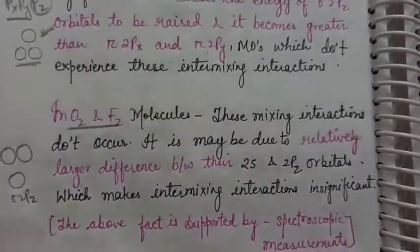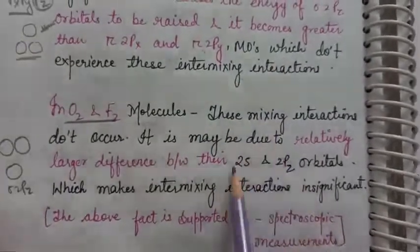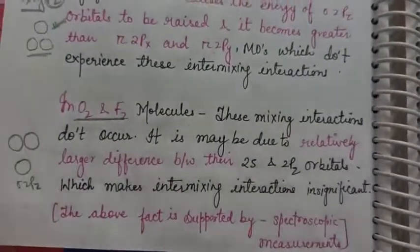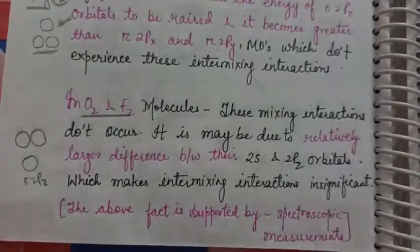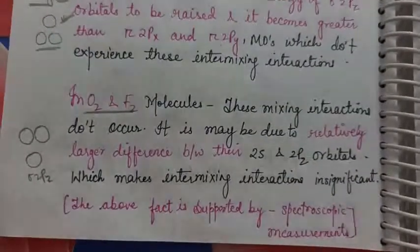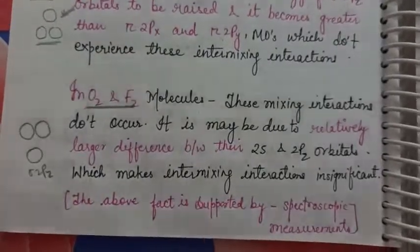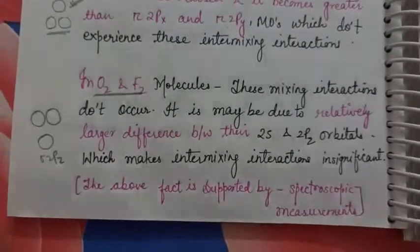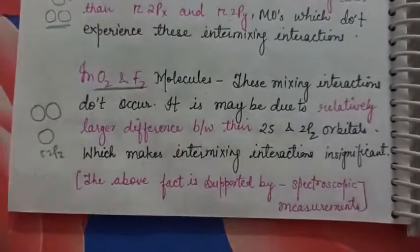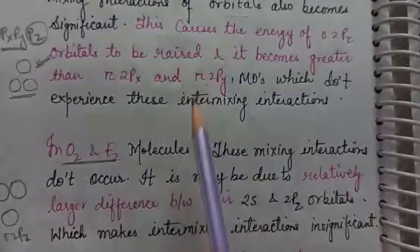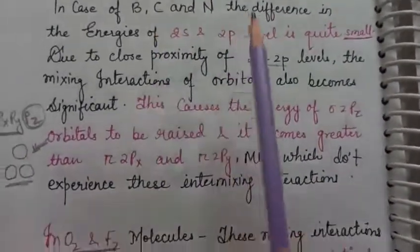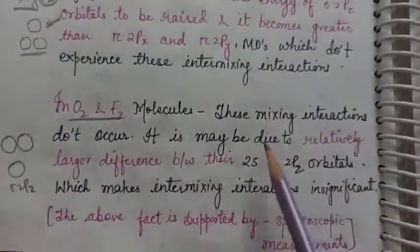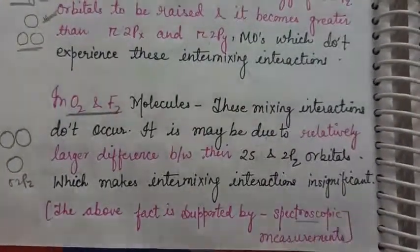In case of oxygen and fluorine, there are large energy differences between 2s and 2p, so there are no mixing interactions in normal situations. We have discussed this topic and the reason I have told you is supported by spectroscopic measurements. Spectroscopic chemistry is a branch that studies the geometry of molecules. So these are the points you have read: why is this difference in the molecular orbital picture? This is supported by spectroscopic measurements also.